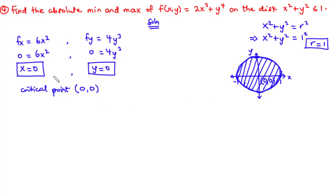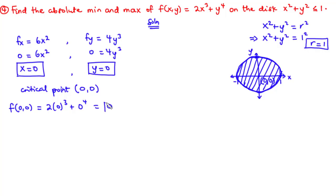The critical point (0,0) is found inside the circle, so we evaluate the function there. f(0,0) = 2 times 0 cubed plus 0 to the power of 4 = 0. At this point, we don't know whether this is an absolute minimum or maximum, so let's move on to find the extreme values on the boundary of the circle.